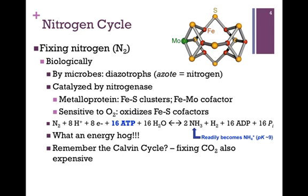Remember the Calvin cycle? That was also quite expensive to fix carbon, because there again we're creating more order and decreasing entropy. I should point out that the two molecules of ammonia that are produced, because the pKa is so high — around 9 — at physiological pH, it readily becomes ammonium ion.